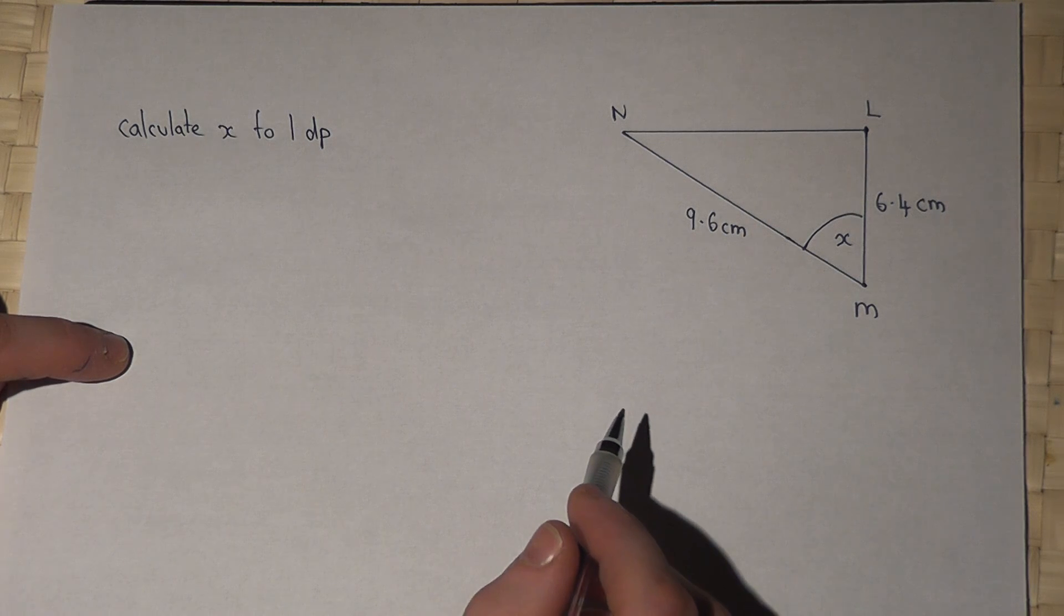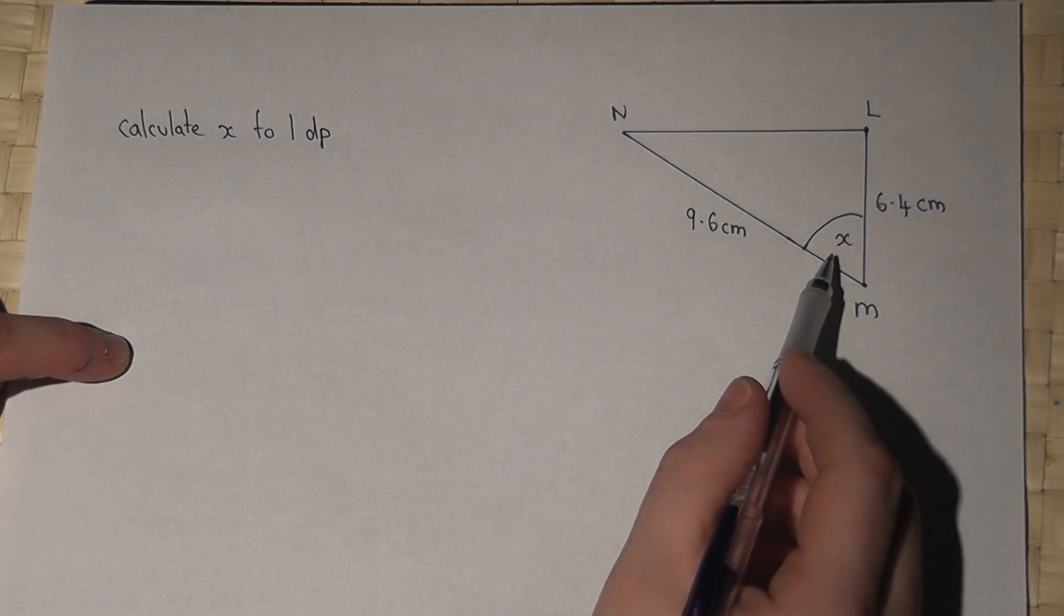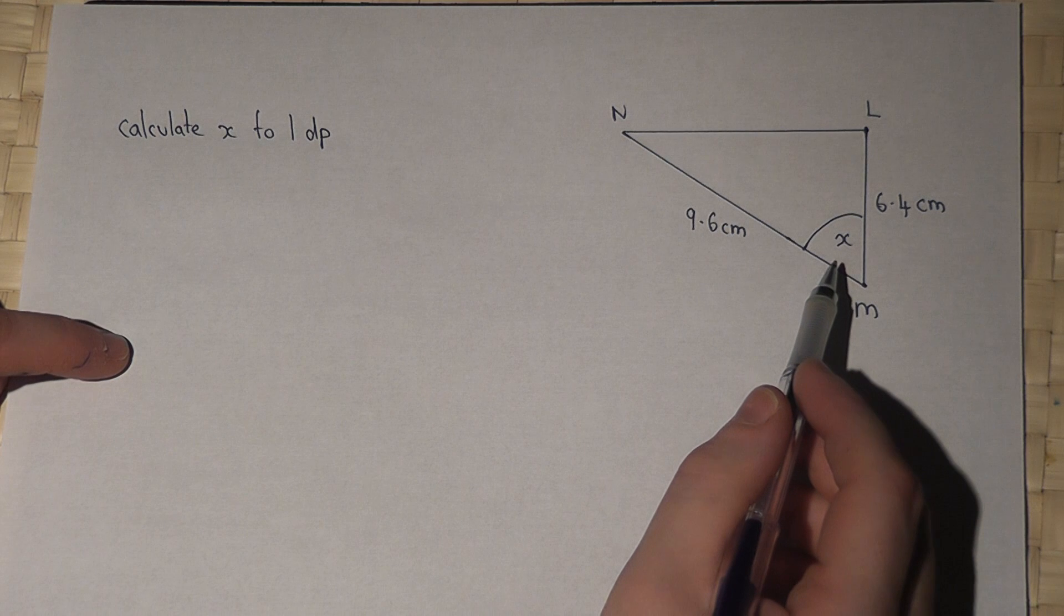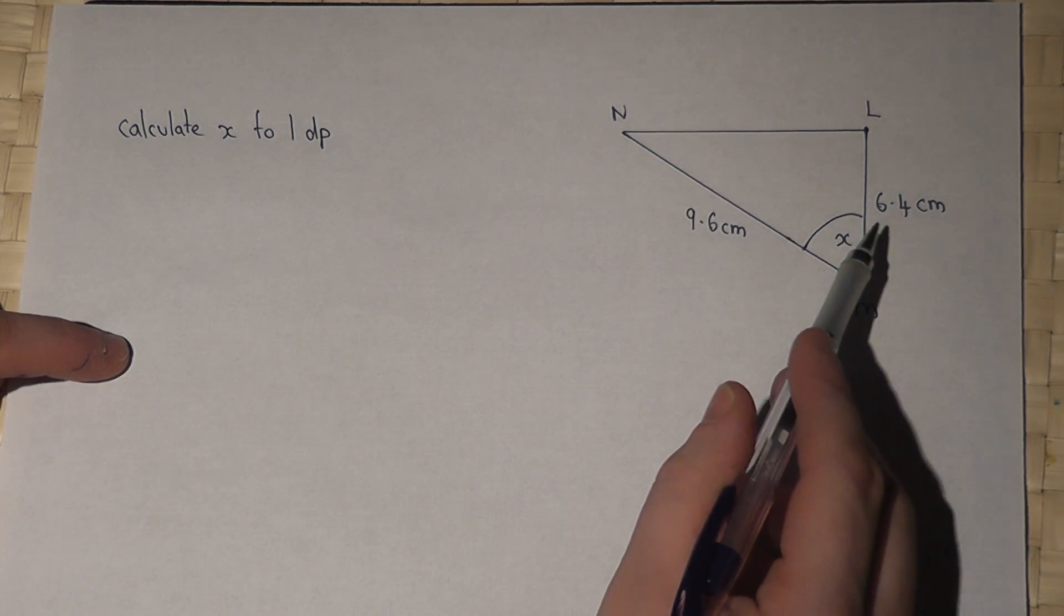In this question we're asked to find angle X to one decimal place. Now we're given two sides.